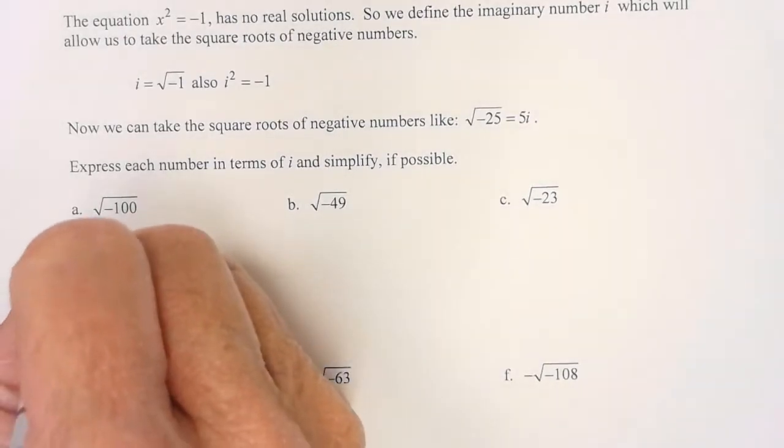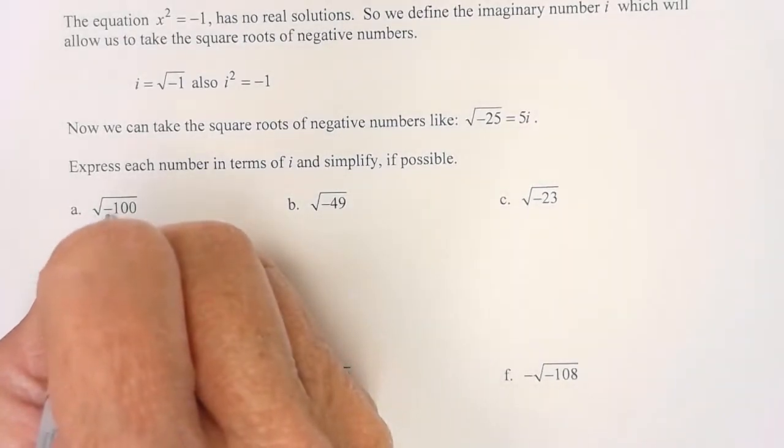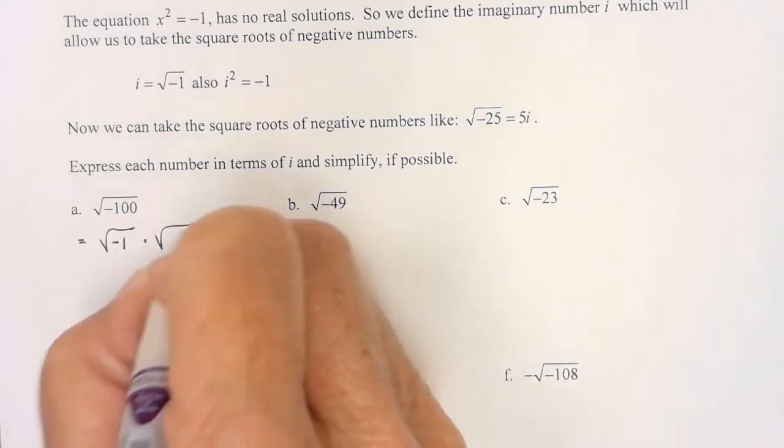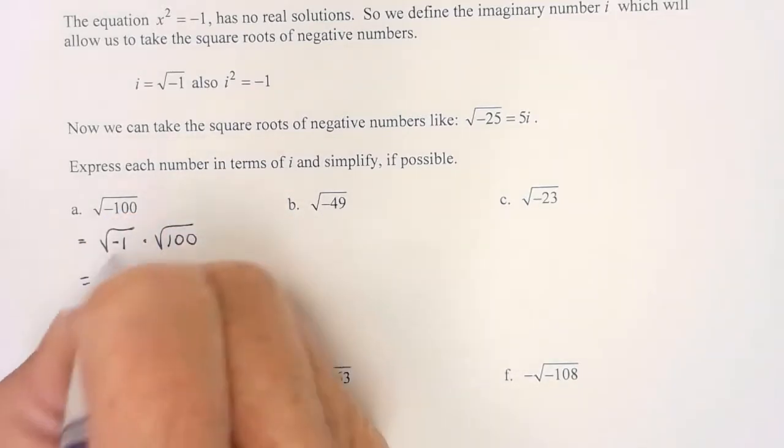So in this one, I see a negative 100. So that's the square root of negative 1 times 100. This is i, that is 10.